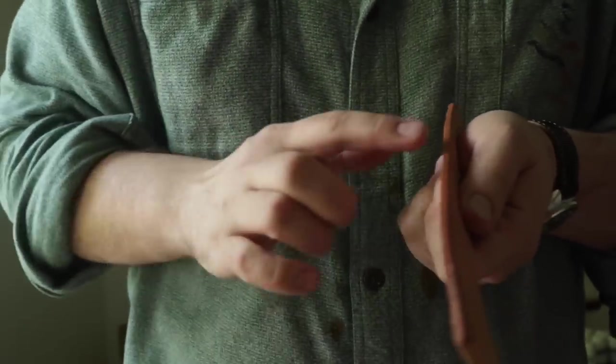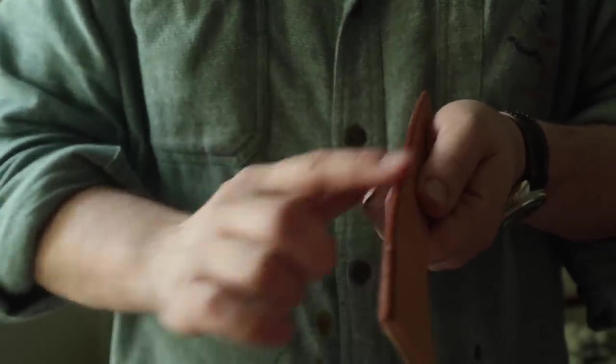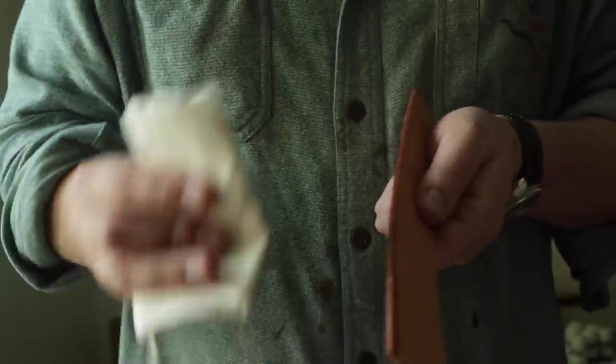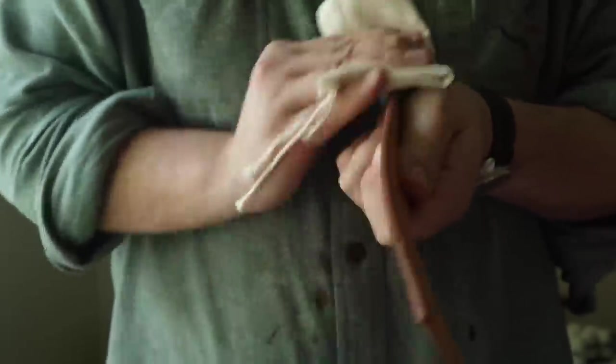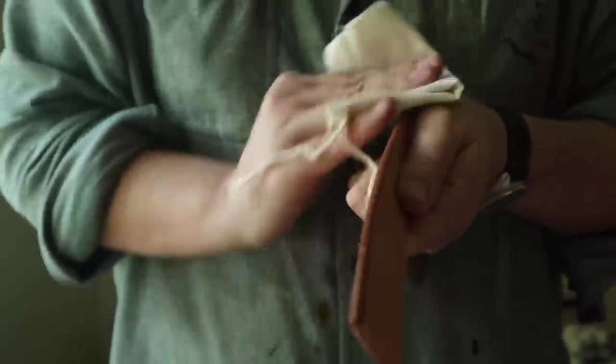I remember when tokonole was first widely available in the States, maybe five or six years ago. A big thing was doing edges that were very lightly colored because tokonole allows you to do that. You don't have to use any pressure or anything like that. It's different than the water burnish or gum trag because that'll darken your edge. It's just personal preference. I personally like the darkened edge, but some people don't. So that will also probably drive your decision on what to use.